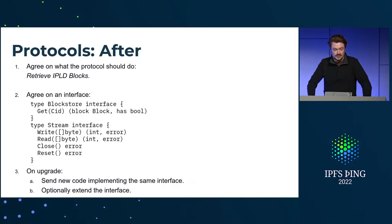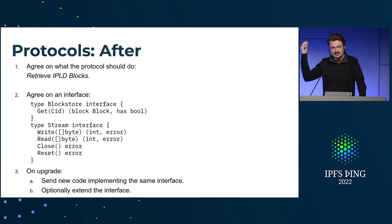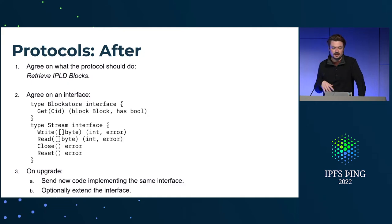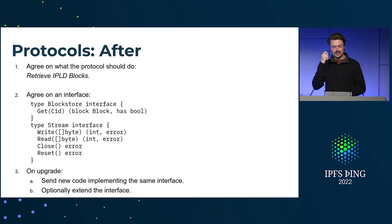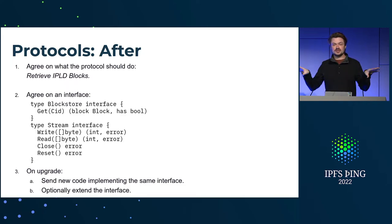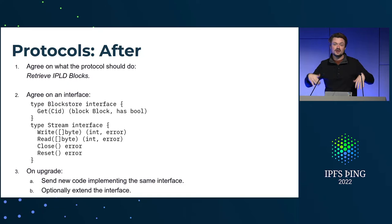But once you can start shipping around code, we can just start by agreeing what the protocol needs to do — it needs to retrieve blocks. Then we agree on the interface. For GraphSync, I define a block store interface: it has a get method, it returns a block and whether or not it has the block. Then I define a stream interface where I can just write bytes, read bytes, close the connection. That's basically the protocol — I just send you a program. You pass an object to this program via its input interface; you implement host functions in Wasm that implement this interface. Now I can start reading blocks out of your block store and start writing bytes back to a stream. You just send me back bytes that I've specified in my program, and I know how to interpret them because I wrote the program.